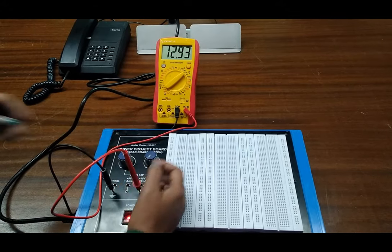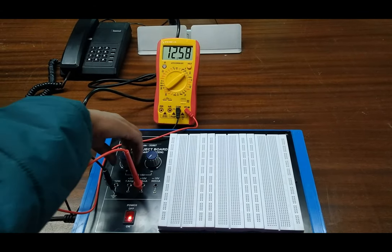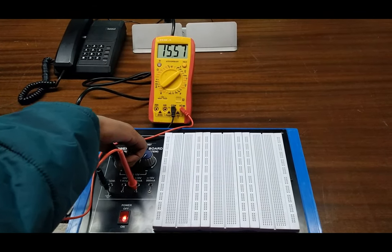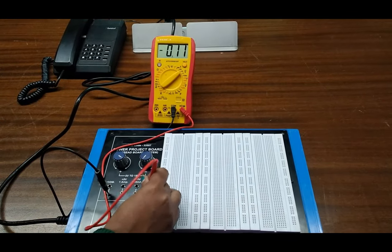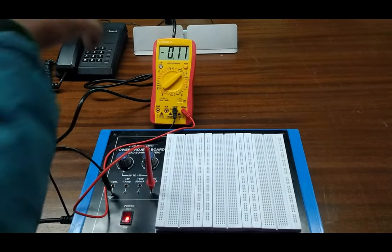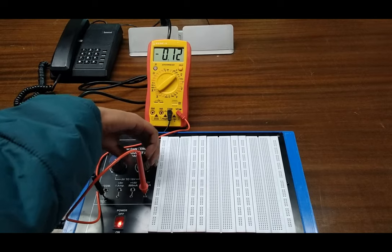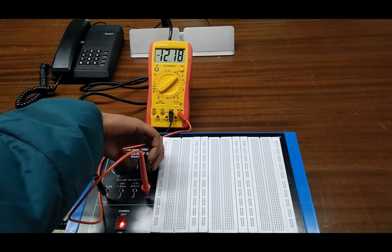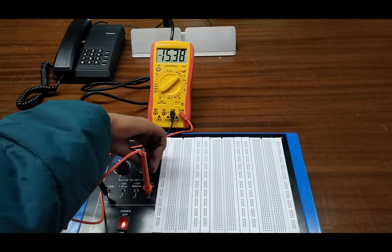Next is 15 volt power supply. With the help of this switch we can vary it from 0 to 15 volt. The next one is minus 15 volt. With the help of this knob we can vary 0 to minus 15 volt power supply.